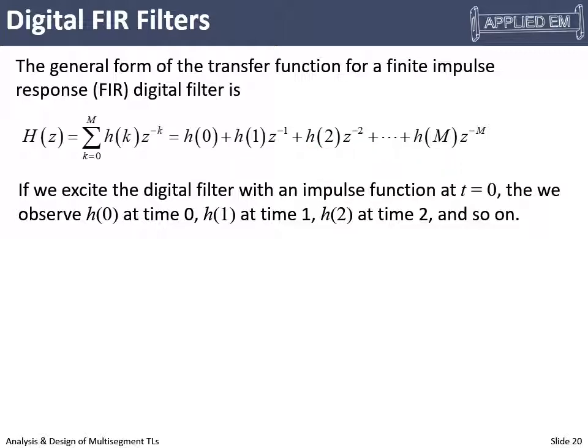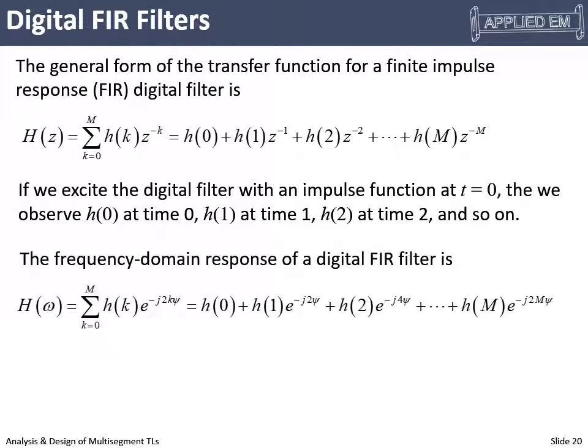And so this is starting to look like what we saw from the multi-segment filter. When we got a gamma naught first, a little bit later, two psi phases later, we get a gamma one. A little bit later, we get a gamma two, then a gamma three, gamma four. And these are starting to look the same now. And in fact, if instead of the Z domain, we express this in the frequency domain, that same finite impulse response filter, now it's looking even more similar to our response from that multi-segment filter.